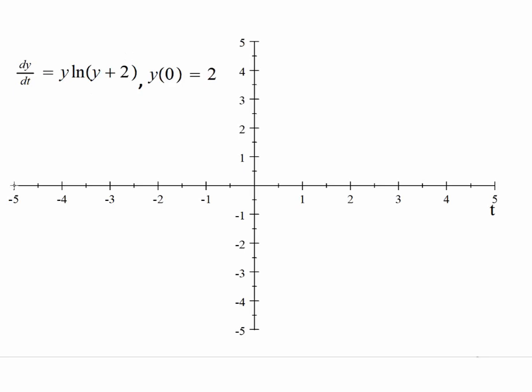So here is our equilibrium solution y equals 0 and then we will draw this y equals negative 1. So these are the two equilibrium solutions here corresponding to the points where this function is 0.